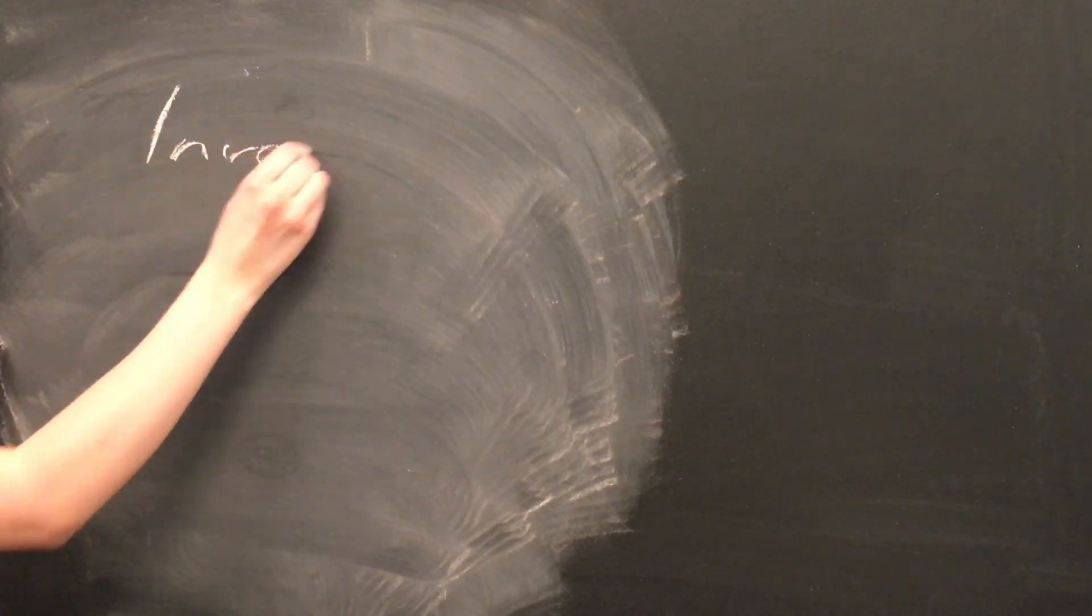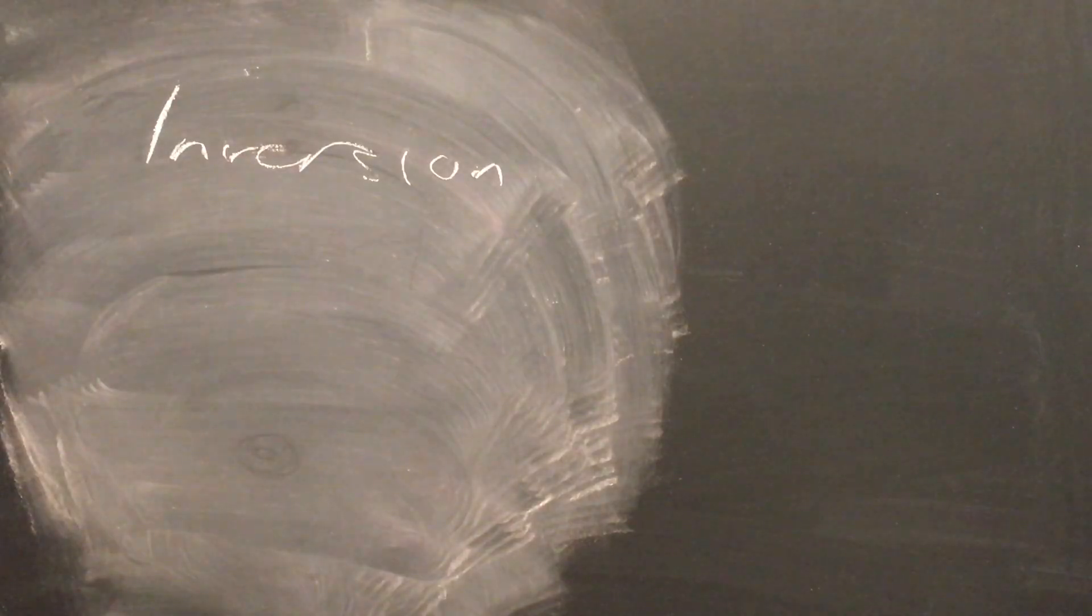Additionally, any time you invert a major triad, you'll get a minor triad, which is pretty interesting. There are other types of operations on the circle, but transposition and inversion are the two most prominent.